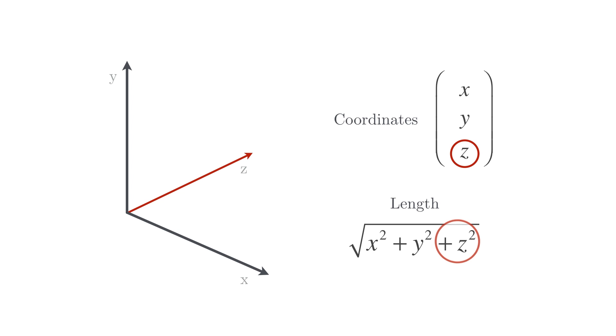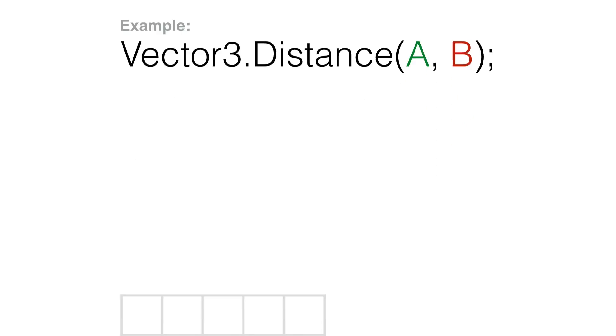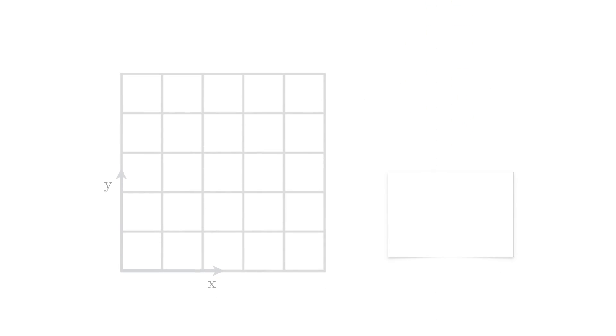At this point you might be thinking, why do I need to know all of this? My game engine has an easy function for getting the distance between two points in space. Well, an example of why this knowledge might be useful to you, is the fact that it has just allowed us to make a very important optimization in our code. Say that we are making a racing game, and we have two players, A and B, who are competing to reach the goal. And in our game, we want to display who is currently ahead.